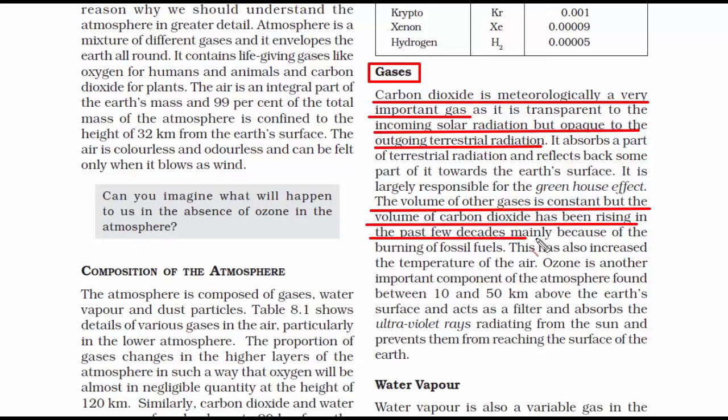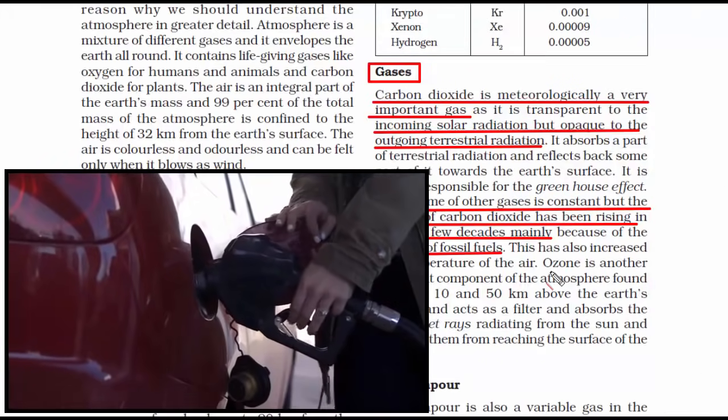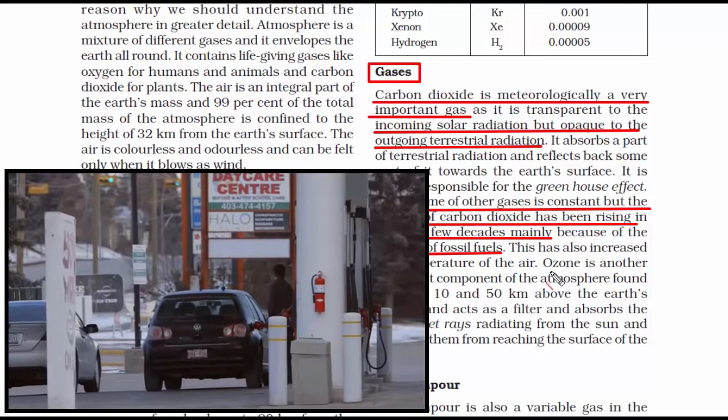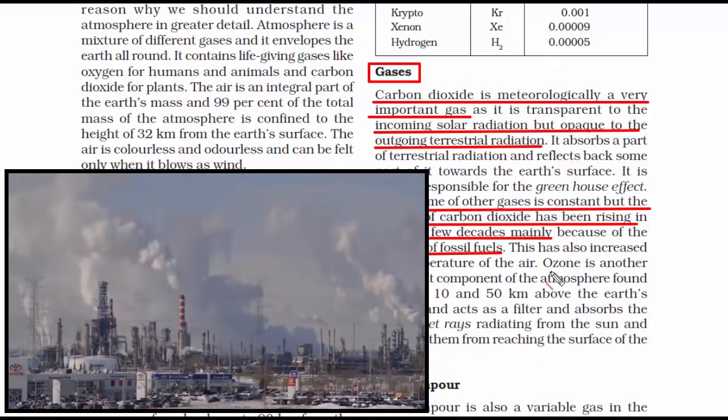Now the interesting part to note is that the volume of other gases is constant, but the volume of carbon dioxide has been rising in the past few decades mainly because of the burning of fossil fuels. Since the industrial revolution, that is from the mid 18th century, the amount of carbon dioxide has increased. Machines on daily basis are using fossil fuels like diesel, petrol and that's emitting more and more carbon in the atmosphere which is increasing the overall carbon content.